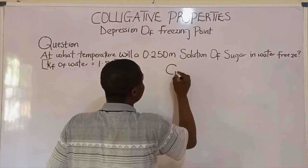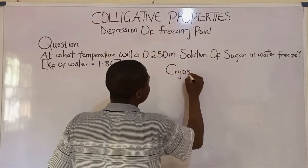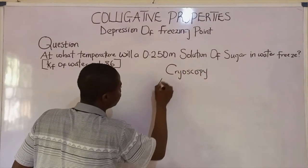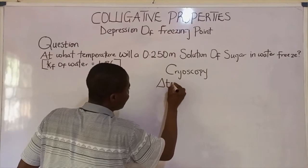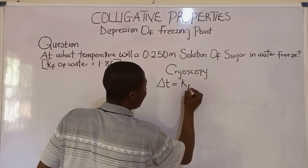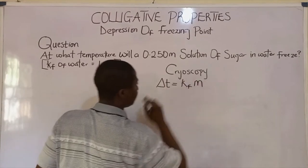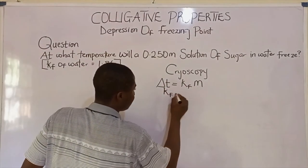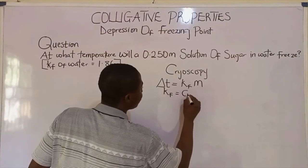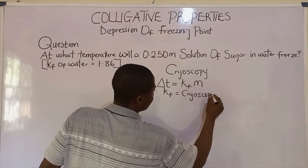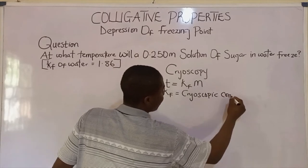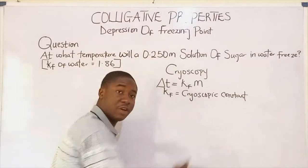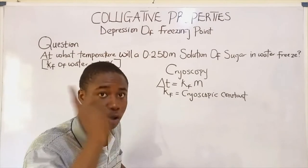Depression of freezing point is also called cryoscopy, and it is given by an equation which is delta t equals Kf times m. Now, what is Kf? It is called the cryoscopy constant, or you call it the freezing point depression constant.